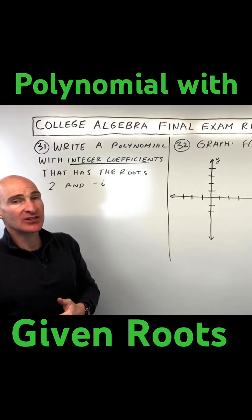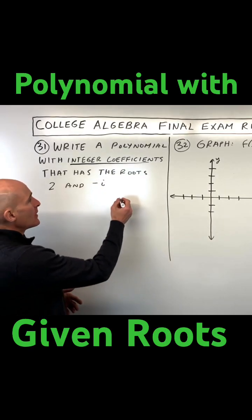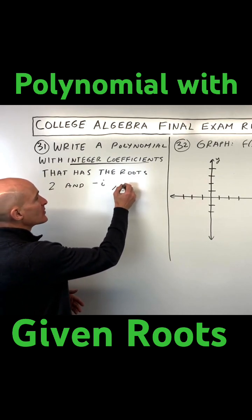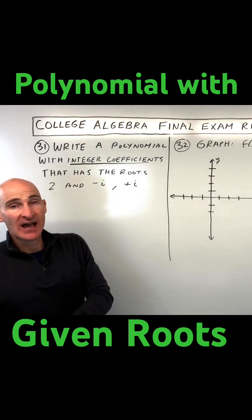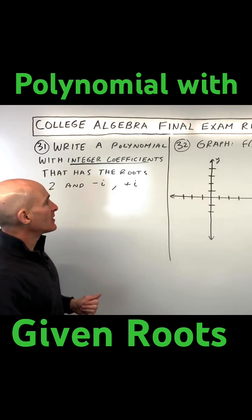You're going to have the complex conjugate also as a zero. So this would be negative i, you would also have positive i. If it was 2 minus i, you'd have 2 plus i. So you have that conjugate.